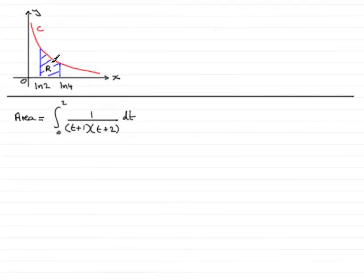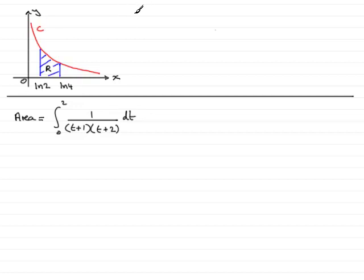In this next part we have to work out the area, which is given by this integral. To evaluate it, we need to use the method of splitting the integrand into partial fractions. So we'll work out what 1 over (t+1)(t+2) is when expressed in partial fractions.